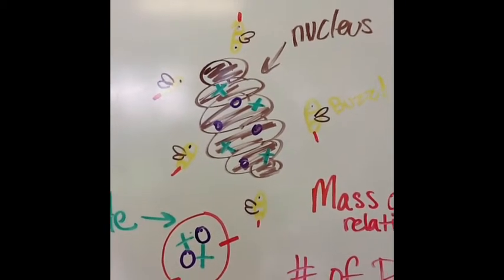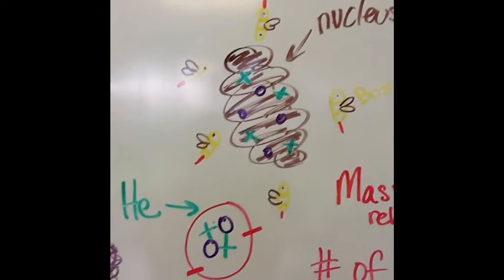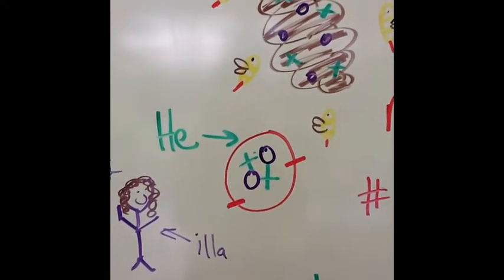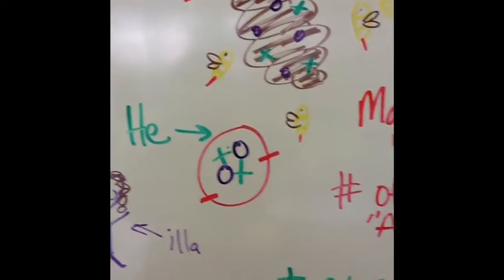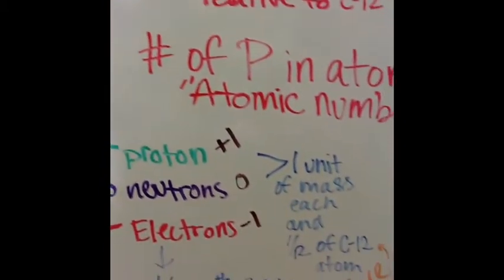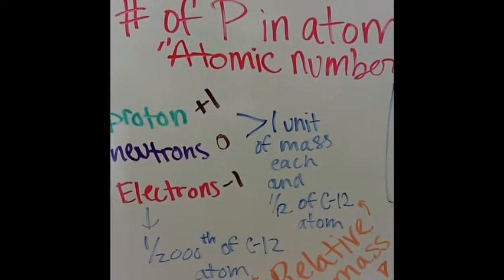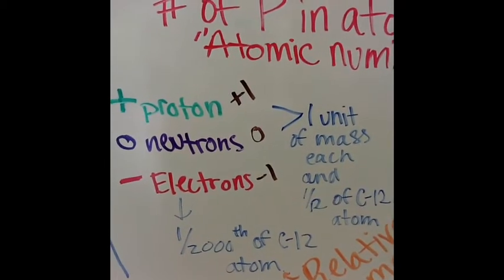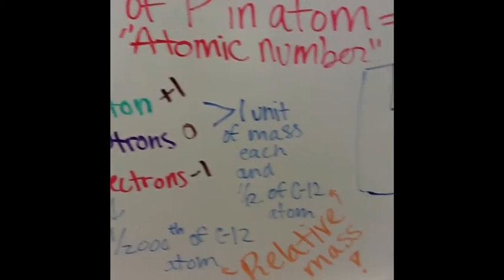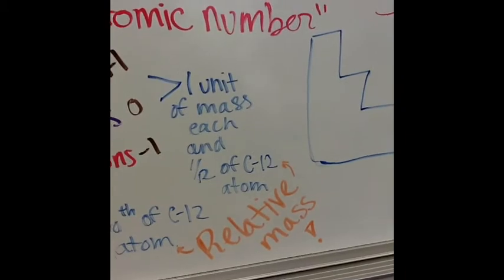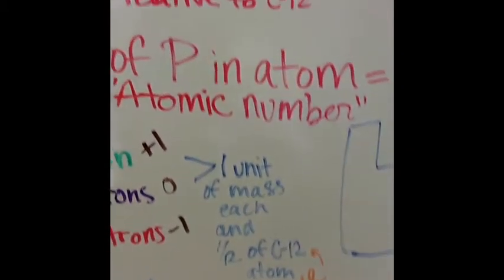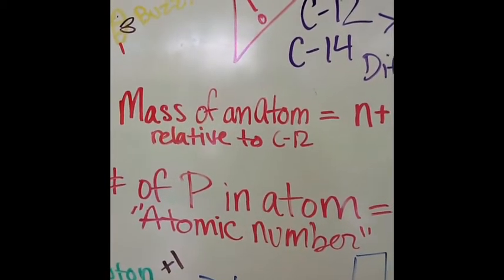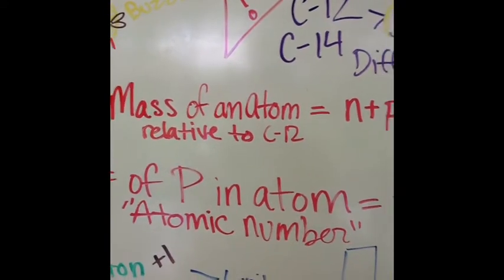In case you didn't get that, this is a typical atom of helium. Protons and neutrons account for the mass of the atom, and are both 1 twelfth of a carbon-12 atom, versus an electron, which is only 1 two-thousandth. This is called relative mass. The mass number of an atom, relative to 1 twelfth of a carbon-12 atom, is denoted with A.